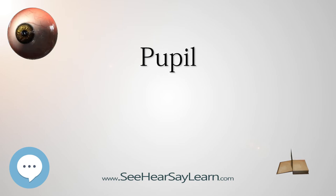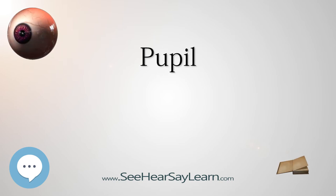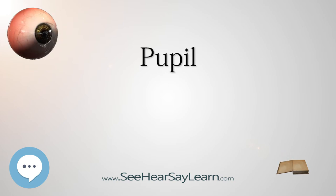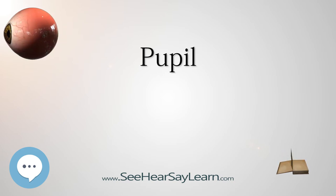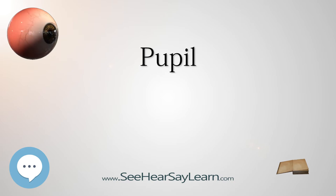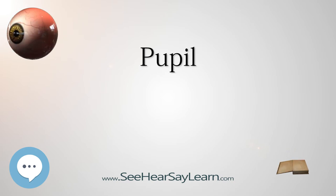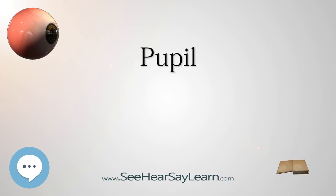One explanation for the evolution of slit pupils is that they can exclude light more effectively than a circular pupil. This would explain why slit pupils tend to be found in the eyes of animals with a crepuscular or nocturnal lifestyle that need to protect their eyes during daylight.